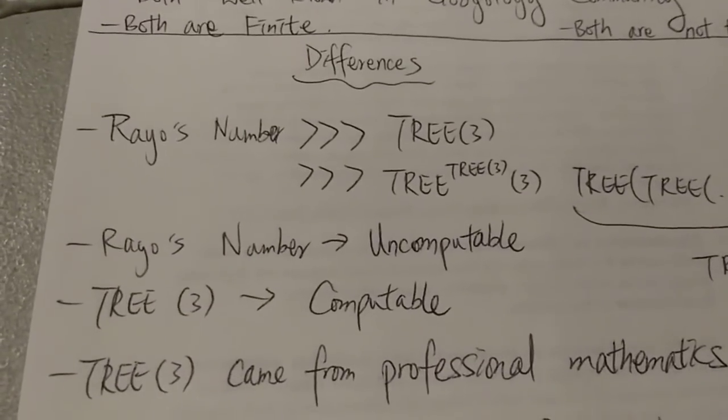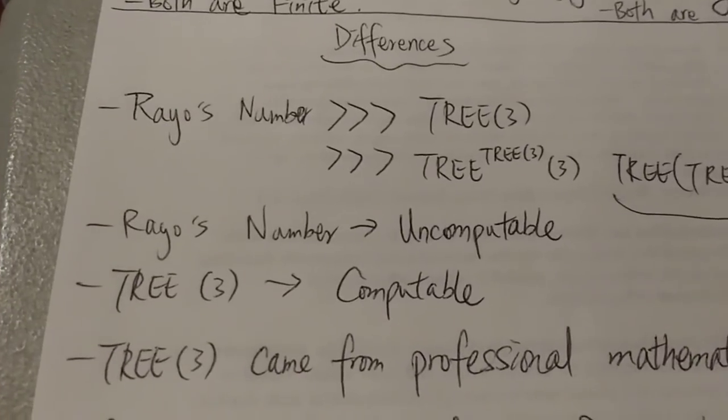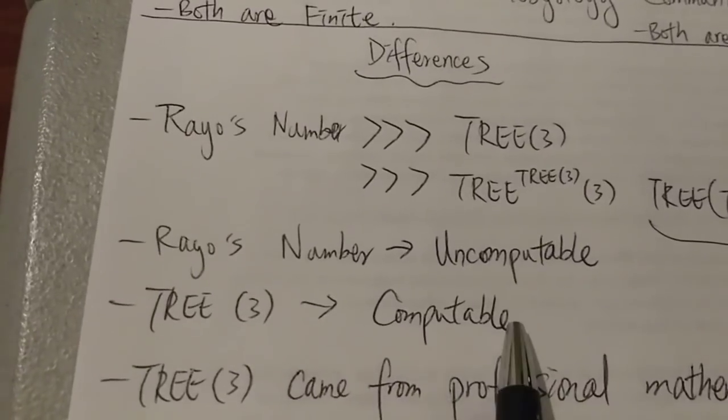And then the next difference is that Rayo's number is uncomputable. It's an uncomputable number, an uncomputable function.